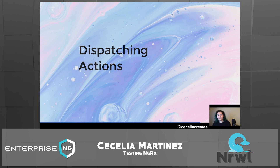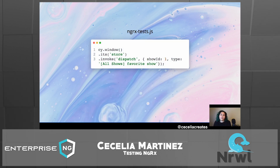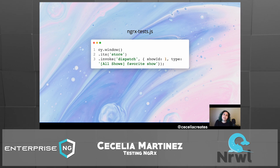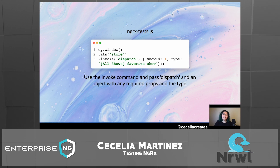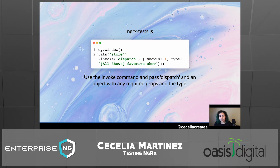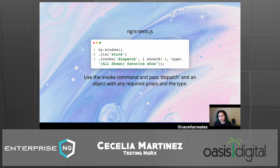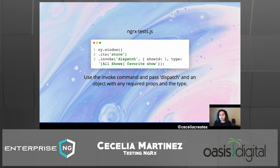Let's take a look at how to do that — it's simpler than you'd think. In our test code, we use cy.window to grab the browser window the application is running in. Then we grab the store and invoke a command. You can use the Cypress invoke command and pass through 'dispatch' with an object containing the type of action you want to dispatch and any required props. For example, for the favorite show clicked action, you need to pass through a show ID. If we were doing get all show success, we'd need to pass through a shows prop object.